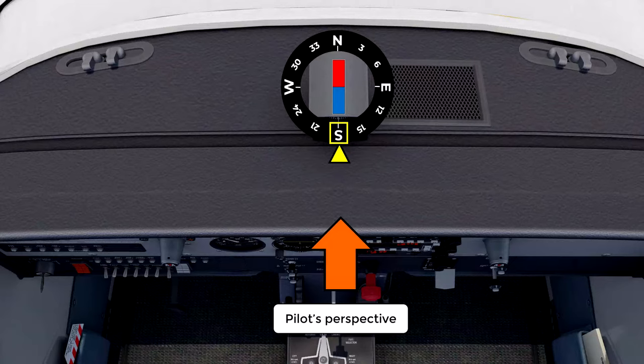With this new design, a new problem arises and it is that the compass indicates the opposite heading to the real one. For example, in this case, even though the aircraft is heading north, the compass indicates heading south. So the solution for this is to invert the compass card so that the correct heading is indicated.